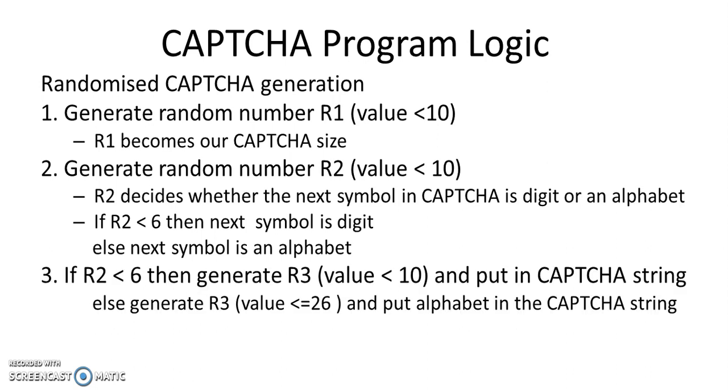If R2 is less than 6, we generate random R3 in the range 0 to 9 and append it to our CAPTCHA string. Else, random R3 is generated in the range 1 to 26, converted to an alphabet, and appended to the CAPTCHA string.